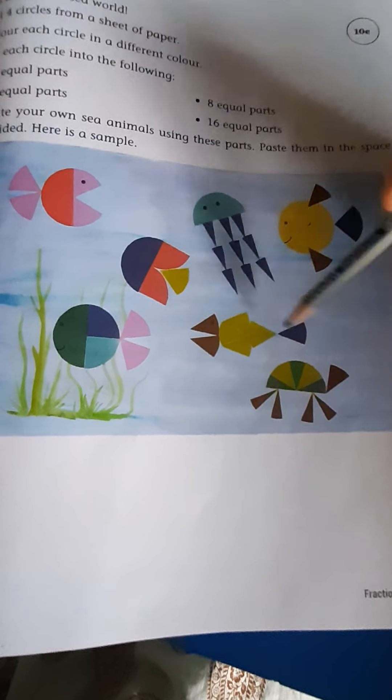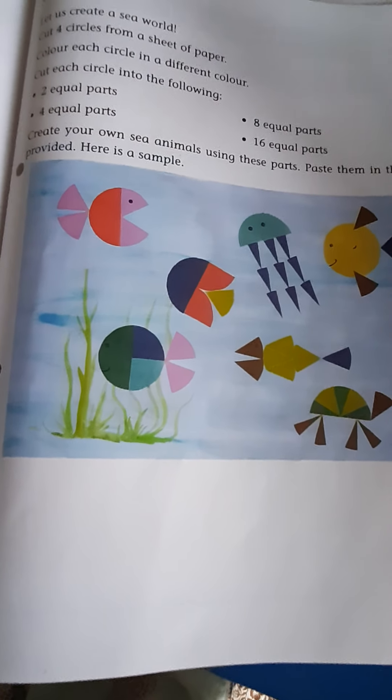Children here given already some examples. Am I correct? Yes. Here these fishes are made with only paper. So you have to create your own sea animals like this. And here given space children. In back place you are given space here. You have to paste your images. Here you have to paste your images.